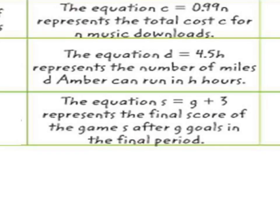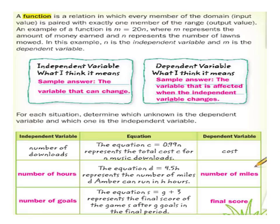The equation D equals 4.5H represents the number of miles D, Amber can run in H hours. Which of these is independent? The D. Well, it told you that hours was in there. Time is always independent. So time is independent. Number of miles. Miles is dependent. Let's look at this next one. The equation S equals G plus 3 represents the final score of the game S after G goals in the final period. So G would be the number of goals in the game plus 3 which happened in the final period. And S is the final score of the game. Notice the final score, it will depend on how many goals were scored during the game. So final score was S. So S depends on the number of goals scored during the game. There's the answers.